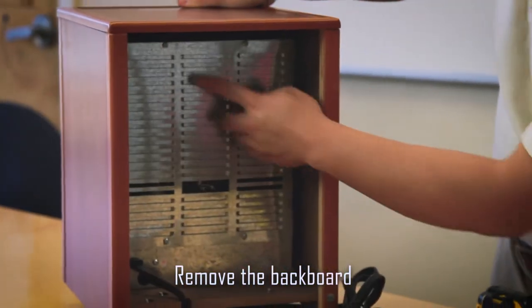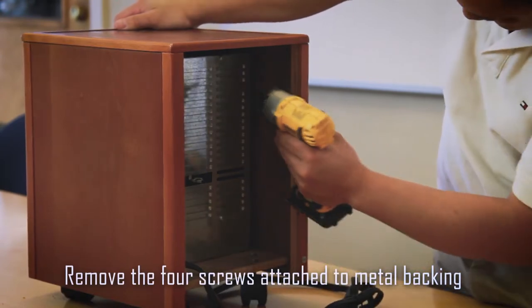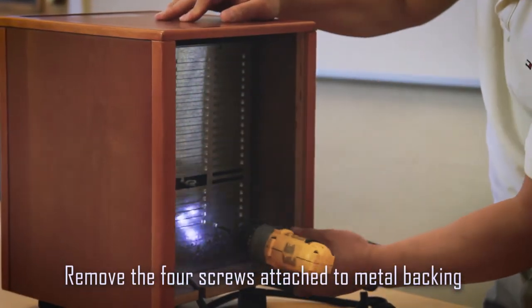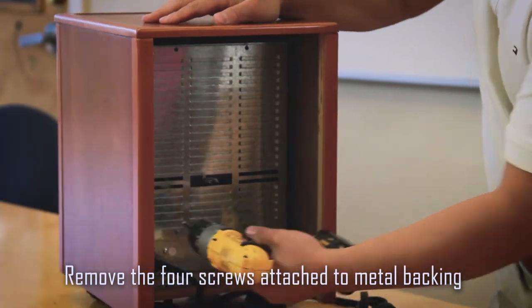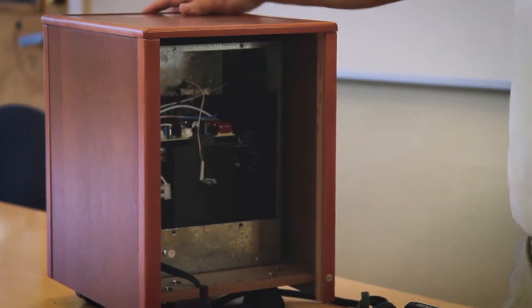You should see four screws attached to the metal backing. Remove the four screws. Remove the metal backing and you should see the rear circuit board.